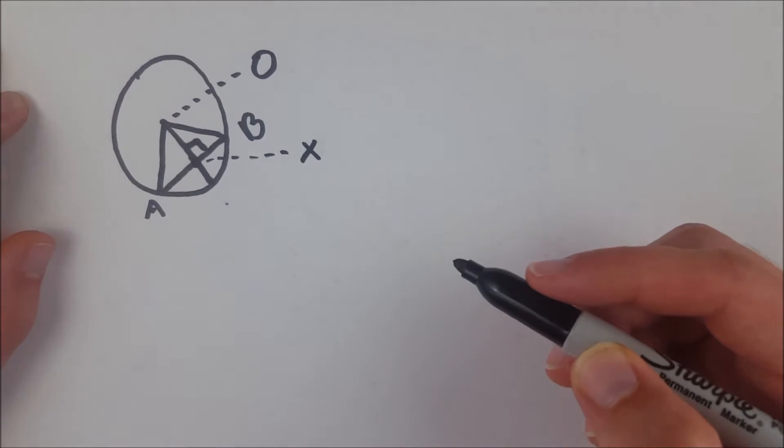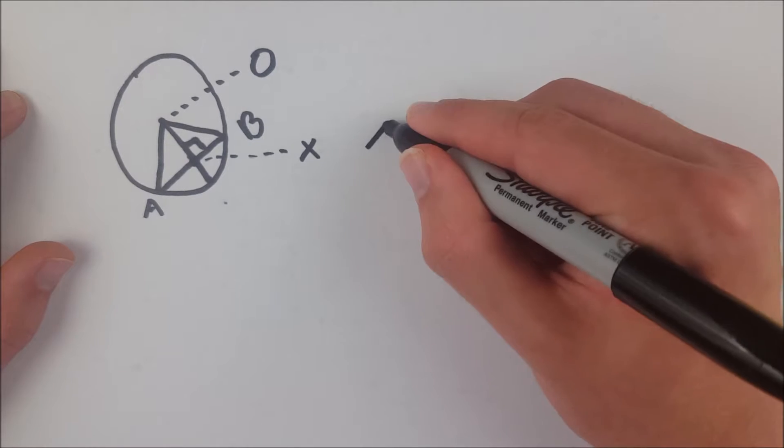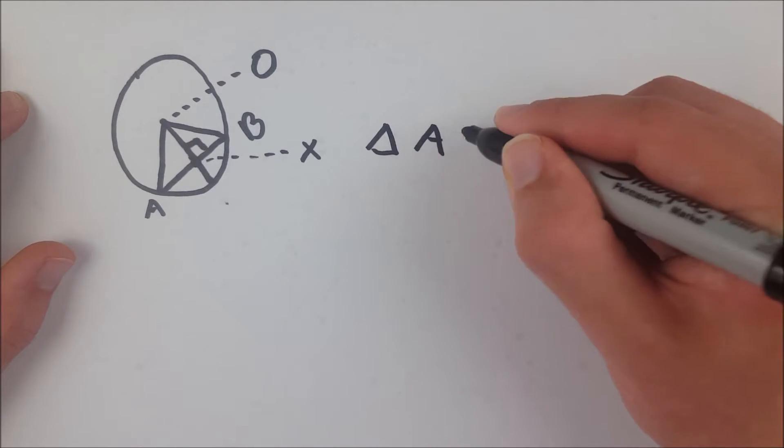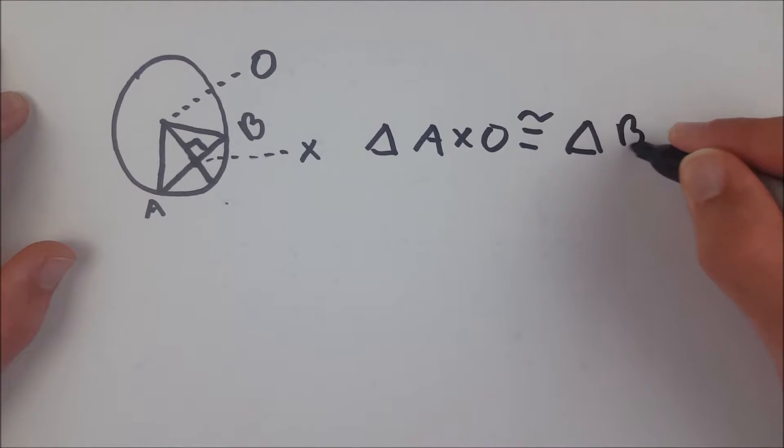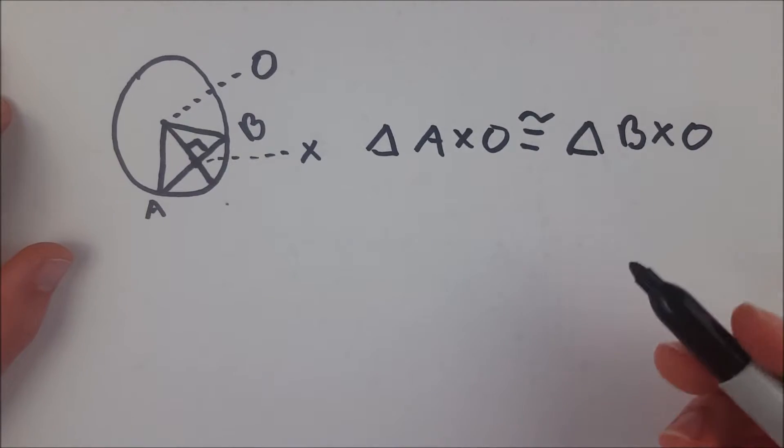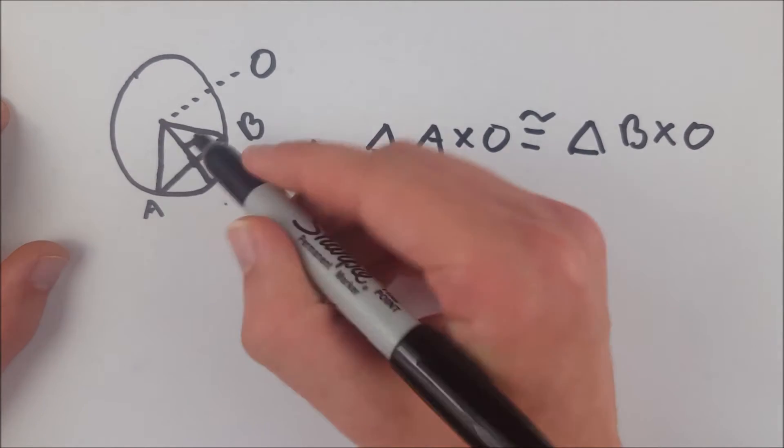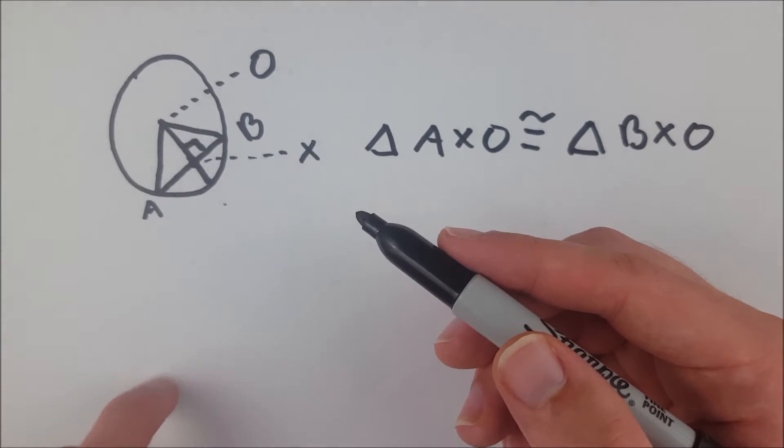Well we're just about done. Now we can note that triangle AXO is congruent to triangle BXO. And why is that? Well, hypotenuse leg. We know that this hypotenuse is congruent to this hypotenuse because they're both radii of the same circle.